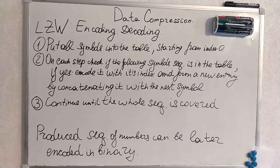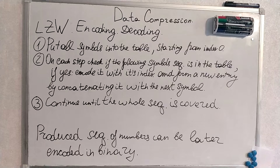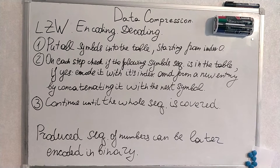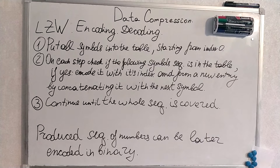We put all symbols from our source alphabet into the table starting from index 0. On each step we check if the preceding-following symbol sequence is in the table — or sometimes just one symbol. If yes, we encode it with its index and form a new entry, concatenating it with the next symbol. If not, we move forward. We continue until the whole sequence is encoded.